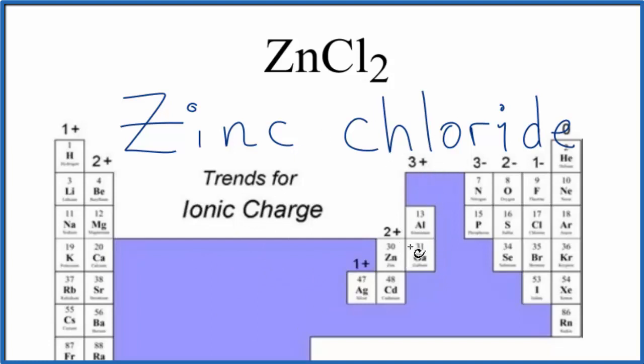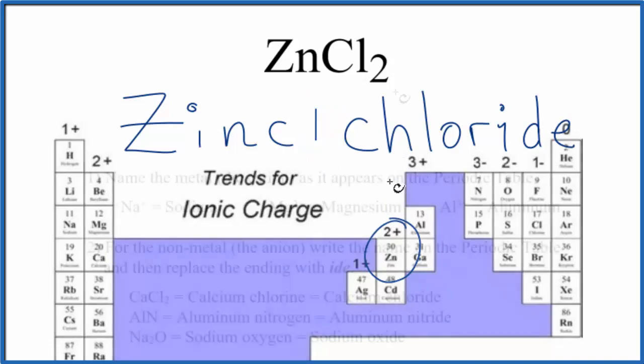But since zinc, it's kind of an exception. It's always 2+. So because it's always 2+, we don't need to write Roman numeral 2 in zinc chloride. We just leave it like this.